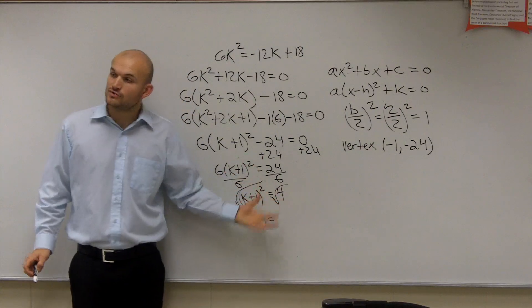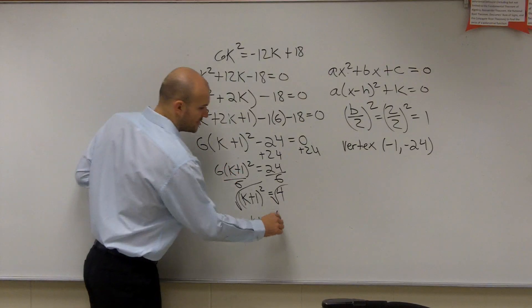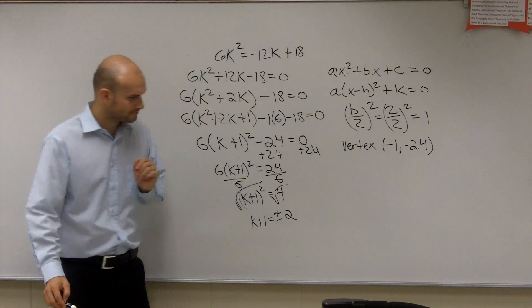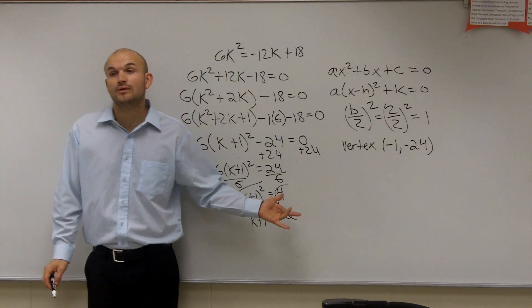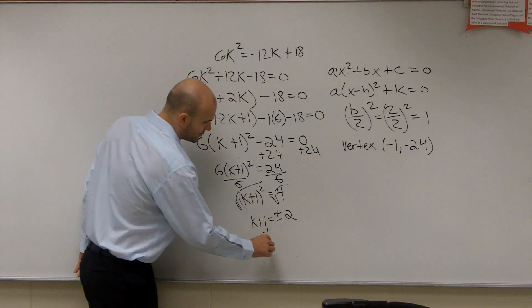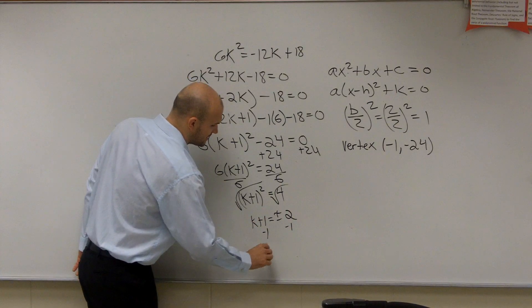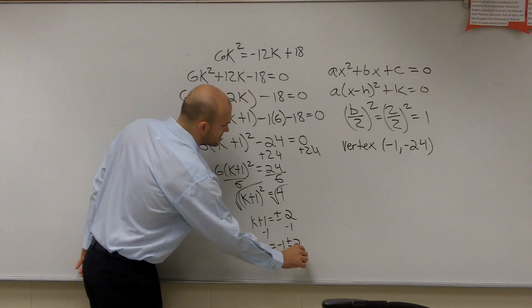So now I have k plus 1 equals. Now remember, when you introduce the square root, we have to include the positive and the negative. So that's going to be plus or minus 2. Because the square root of 4 could be positive 2. It also could be negative 2. Then I'll subtract the 1 on both sides. So I have k equals negative 1 plus or minus 2.